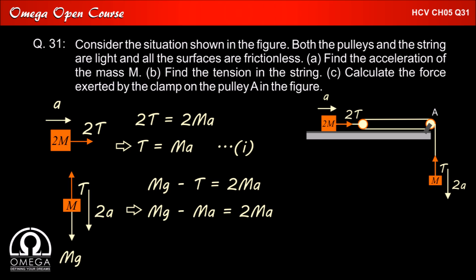Putting the value of tension in the equation, we get mg minus ma is equal to 2ma which implies 3ma is equal to mg which implies A is equal to g by 3. The acceleration of block of mass m is 2a that is 2g by 3. This is our answer.